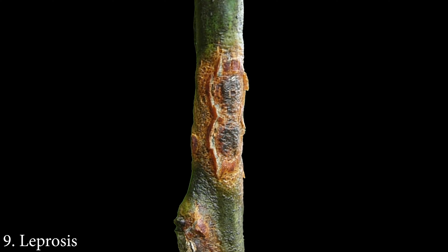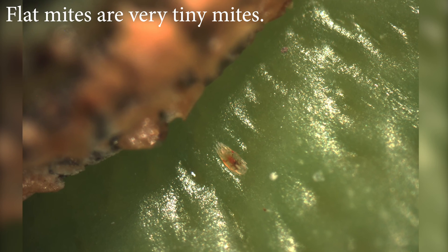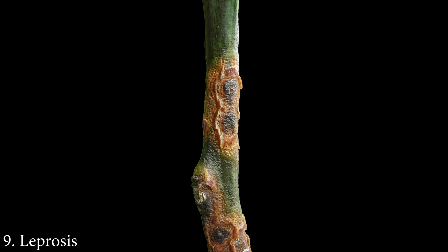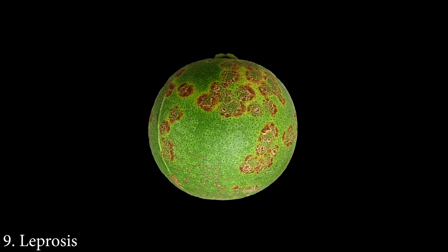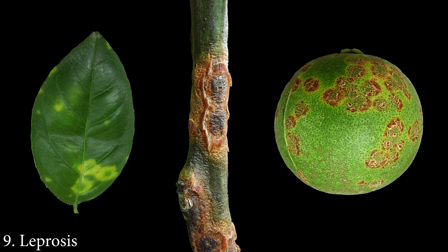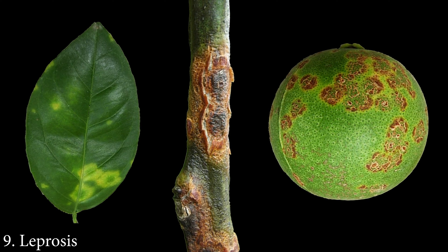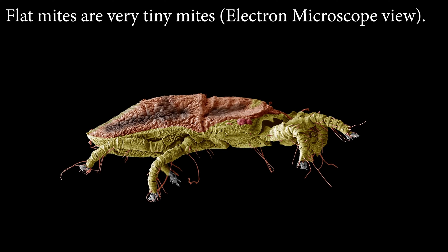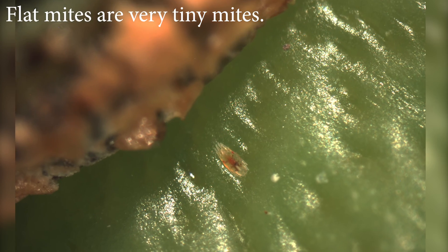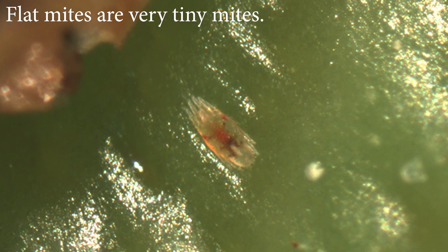Leprosis is a viral disease of citrus spread by grafting and by flat mites. It causes symptoms on citrus foliage, twigs, and fruit. Leprosis has been spreading northward from South America and now exists as far north as Mexico. Flat mites already exist in California and leprosis could become a problem here if citrus plants or cuttings were illegally brought to California from infested areas.